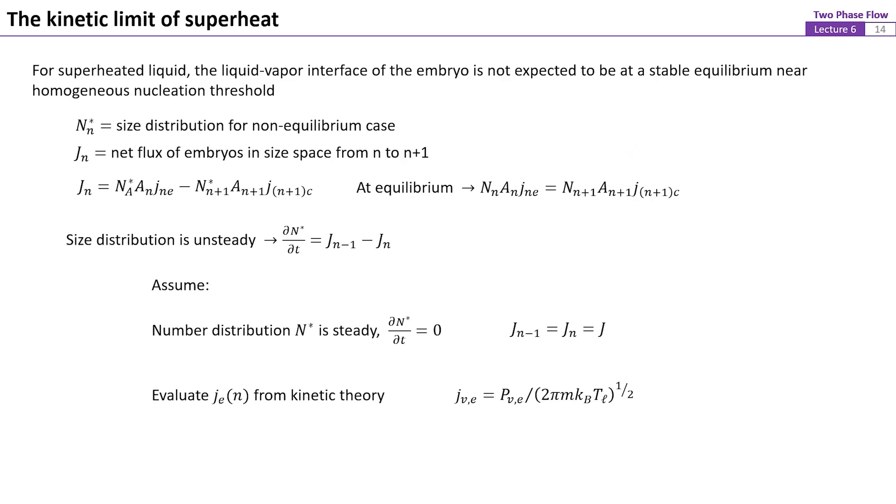For a superheated liquid, the liquid vapor interface of the embryo is not expected to be at a stable equilibrium, especially in linear homogeneous nucleation threshold. This means that the size of embryos would change. Here, define Jn as the exact number of embryos of size n that change to size n plus 1 due to evaporation over the number of size n plus 1 that pass to size n due to condensation. In other words, Jn is the net flux of the number of embryos in size space from n to n plus 1. Assume the number distribution is steady and using the kinetic theory of gases, an expression for Jn can be derived.